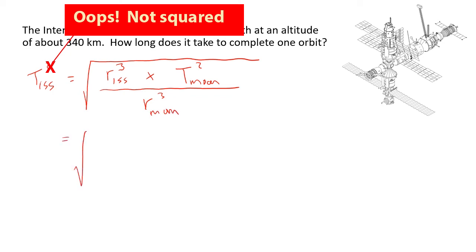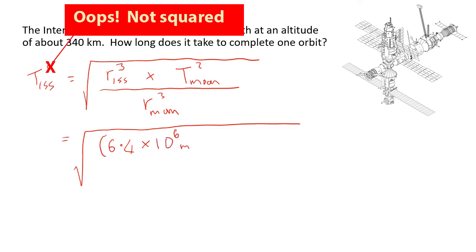A couple of things to pay attention to: R is the center-of-mass to center-of-mass distance, so we need the distance from the center of the Earth to the ISS. The question gave us the altitude — the distance above Earth's surface. The radius of the Earth is approximately 6.4 × 10⁶ metres. We add the altitude of 340 kilometres, converted to 340,000 metres in standard units, giving the ISS's orbital radius. Don't forget it has to be cubed.